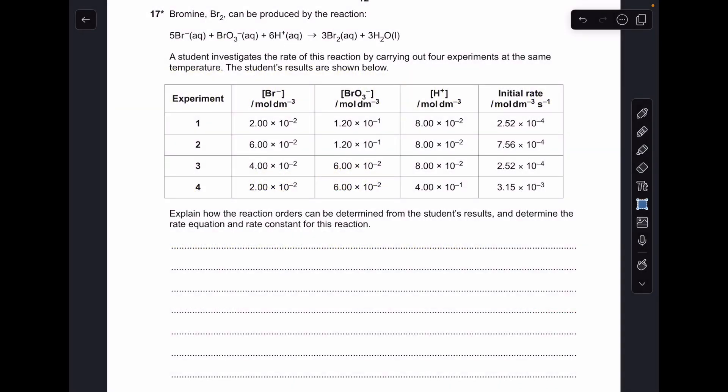Okay, so let's make a start. The reason this is tricky is because there's only one of the reactants that's easy to find the order for. The other two, you've got to sort of have more than one of the reactants changing at the same time.